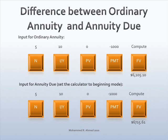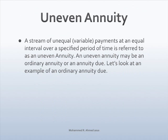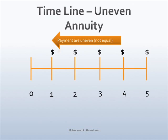The value of the annuity due is higher than the ordinary annuity because of the additional interest earned by depositing the amount at the beginning of the year. A stream of unequal payments at an equal interval over a specified period of time is referred to as uneven annuity. An uneven annuity may be an ordinary annuity or an annuity due.